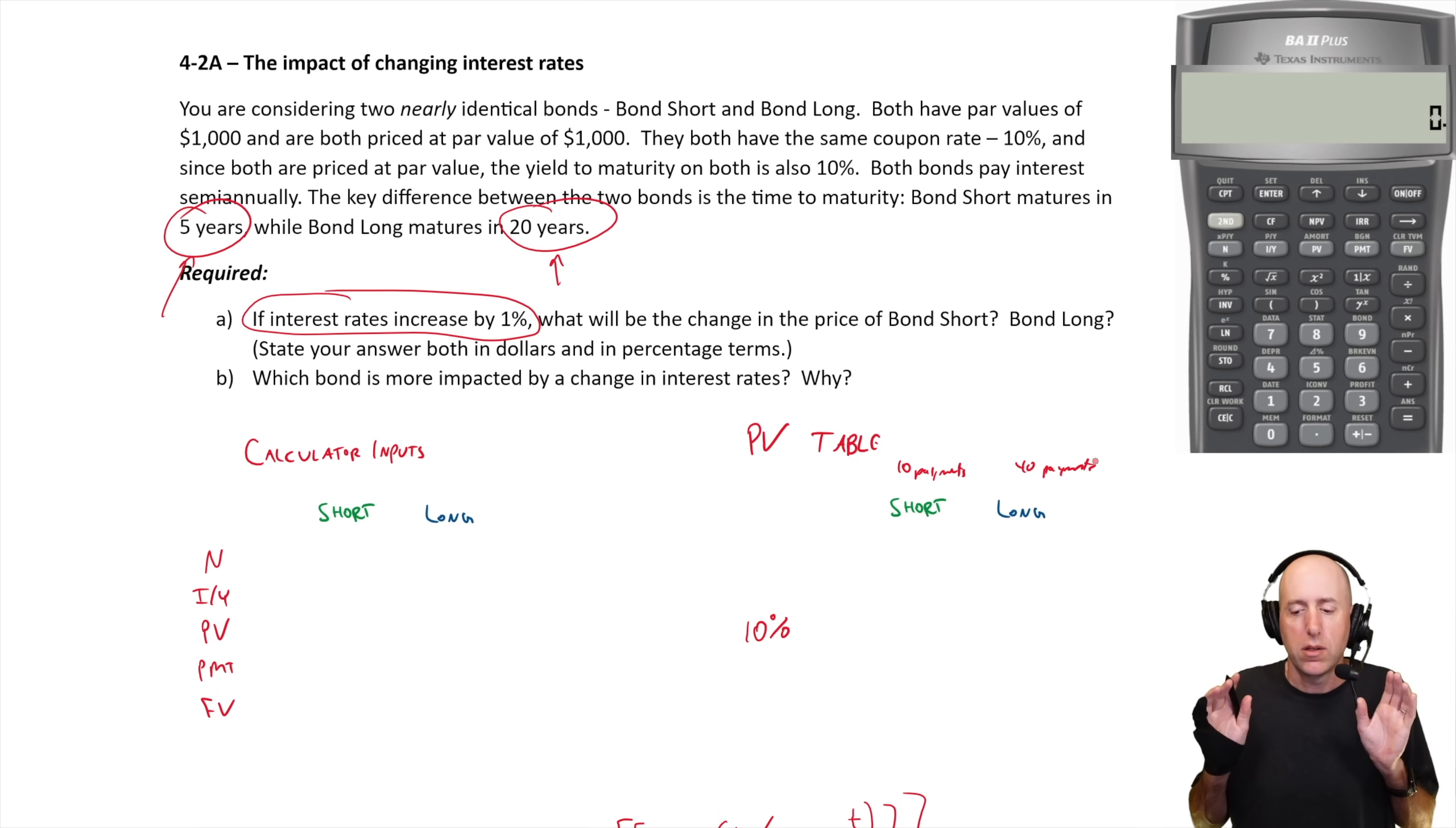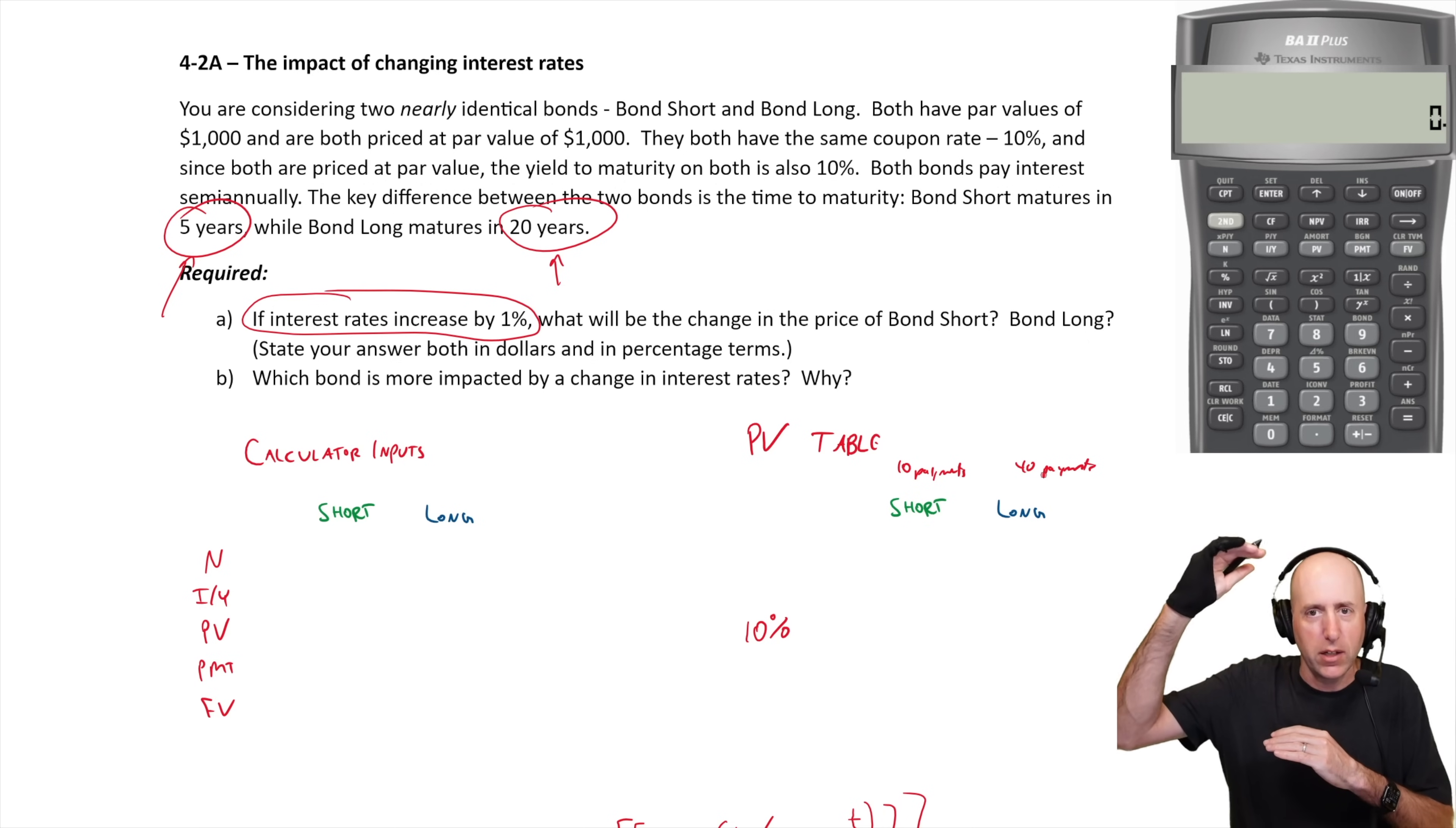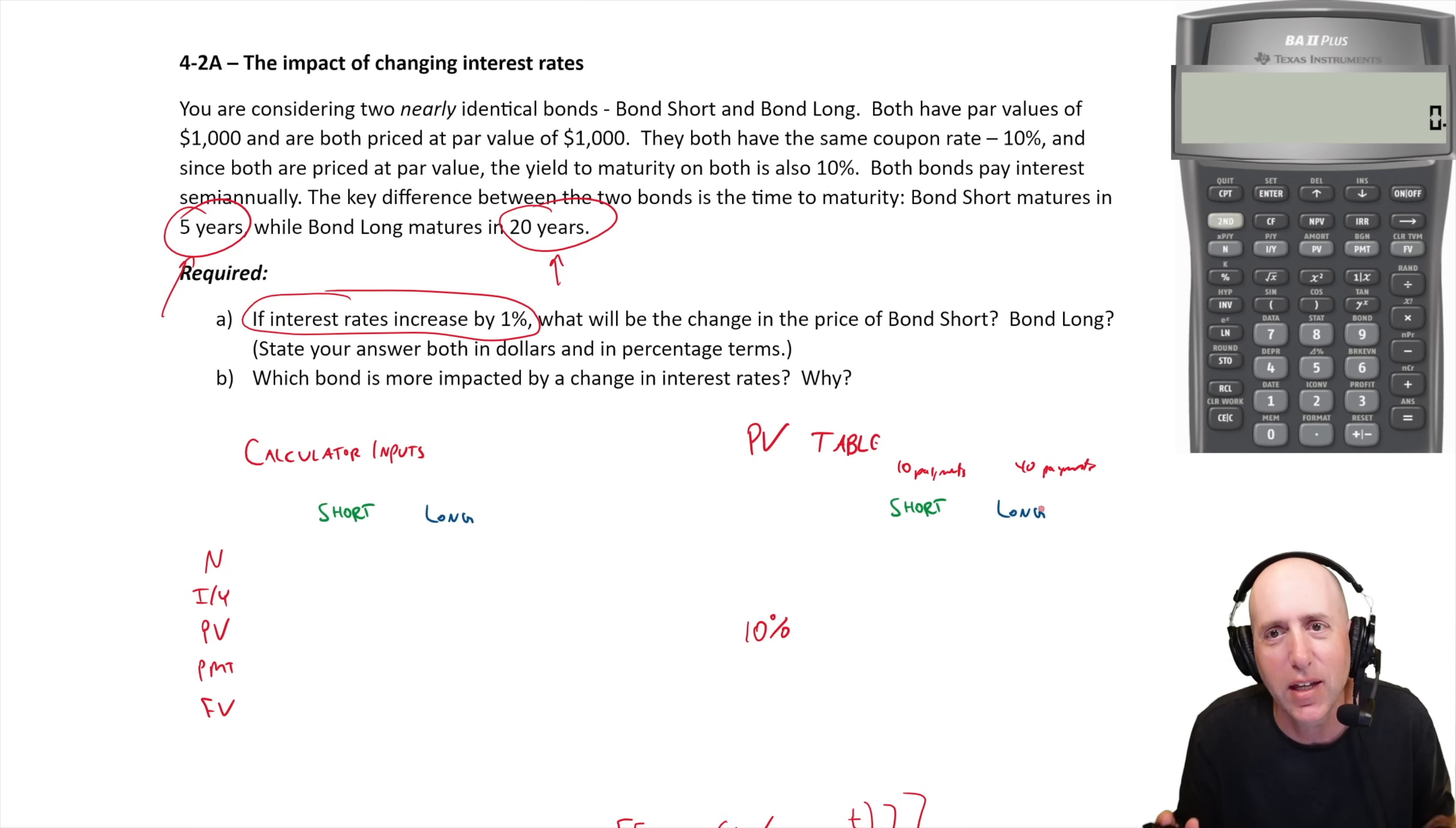The market is going to react to this and say, our interest payments aren't that attractive anymore. I can have 10 unattractive payments or I can have 40 unattractive payments. The answer is the rates of interest in the economy going up is going to hurt the longer term bond value more. Let's actually just solve the problem and then it'll come out in the numbers.